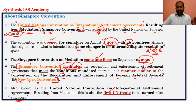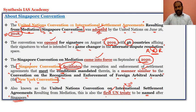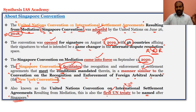This is an important keyword from the prelims perspective: the first United Nations convention or treaty named after a country's name, that is Singapore.